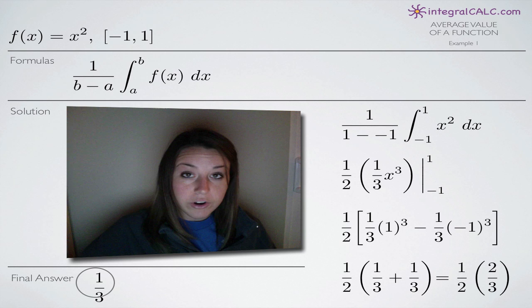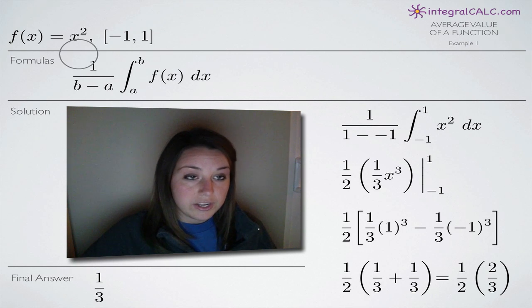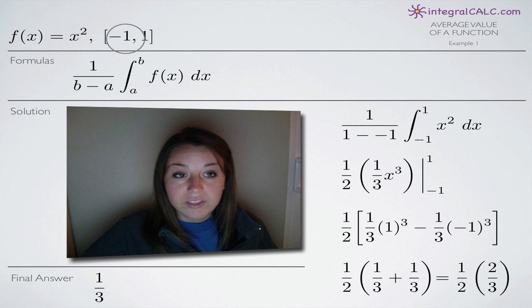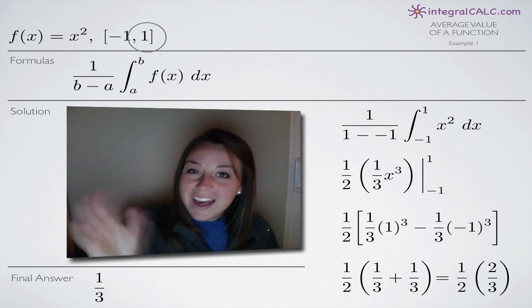So 1 third is the average value of this function f of x equals x squared between the values negative 1 and 1. So I hope that helps you guys and I'll see you in the next video. Bye!